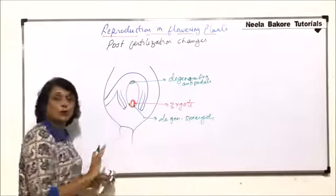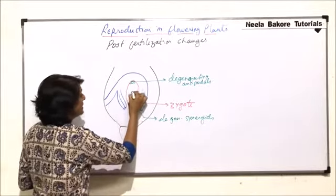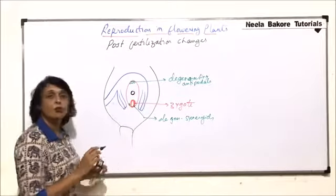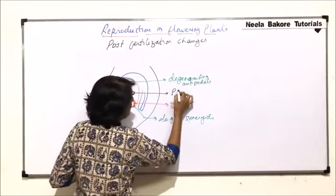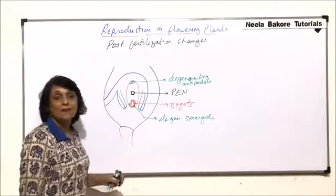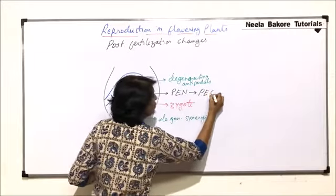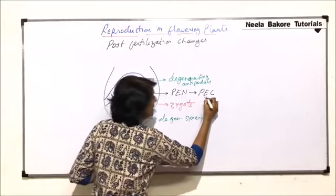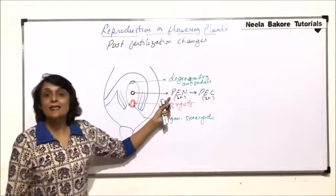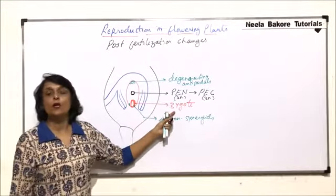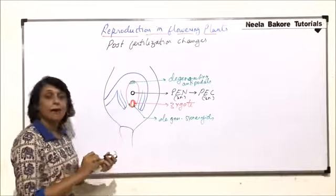In the middle part there is a triploid nucleus and a triploid cell formed. When it was the nucleus, we called it the primary endosperm nucleus, and this primary endosperm nucleus changes into the primary endosperm cell, which is actually a 3N or triploid cell. This is formed as a result of triple fusion, and the zygote is formed as a result of fertilization.